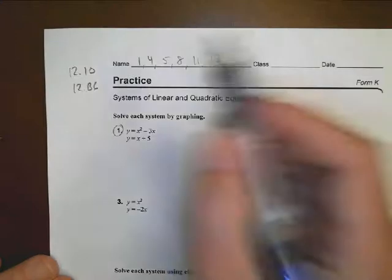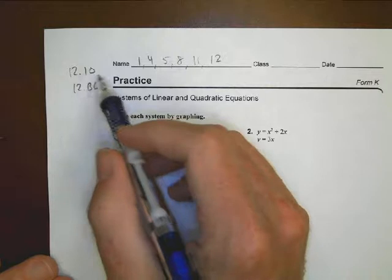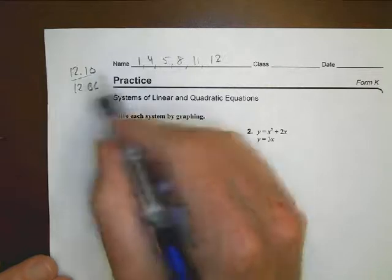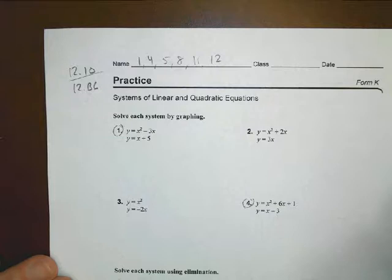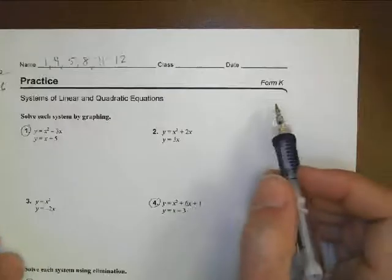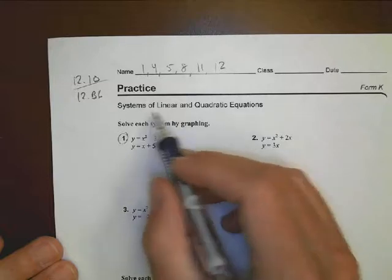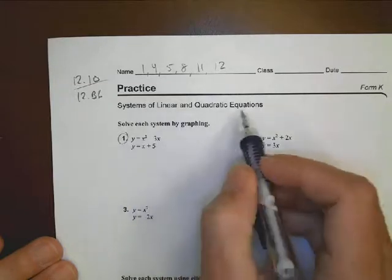All right, this is Math 2, Unit 12, also called 12B6, depending on how your teacher calls this. A little homework help for some of these solutions for Form K that goes with this unit. We have Solving Systems of Linear and Quadratic Equations, looking for solutions of these.